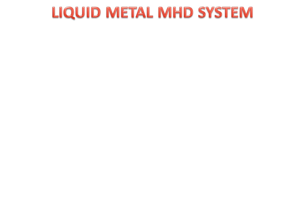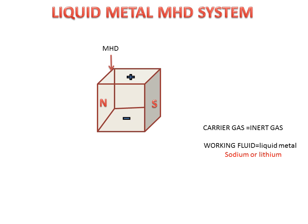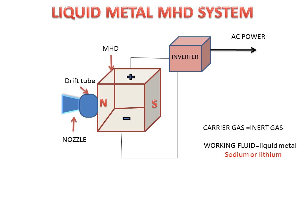In the liquid metal MHD system, we have a carrier gas which is an inert gas, and the working fluid is liquid metal which can be sodium or lithium. We have an MHD system, a drift tube connected to the MHD system, a nozzle for increasing velocity, and the MHD system is connected to an inverter for converting DC power supply to AC power.